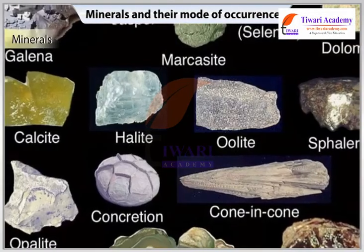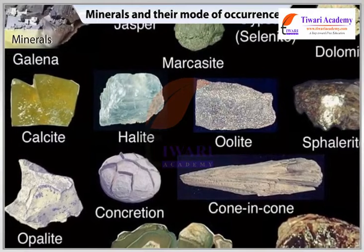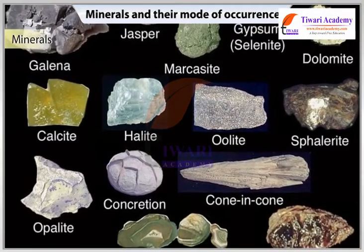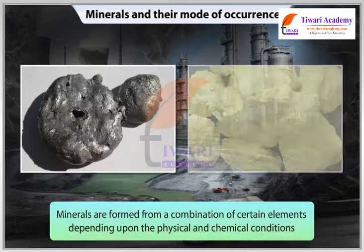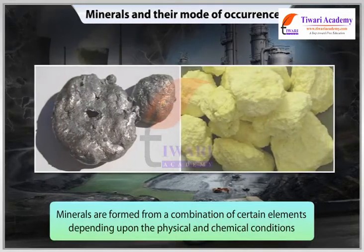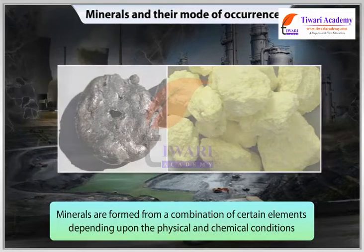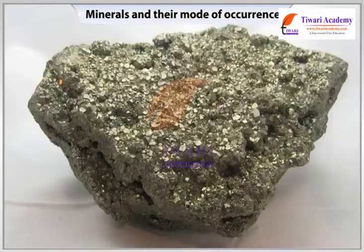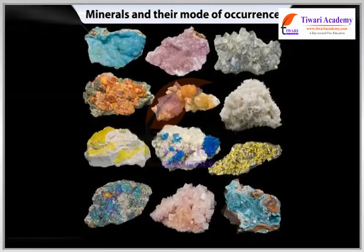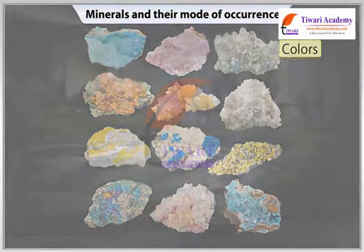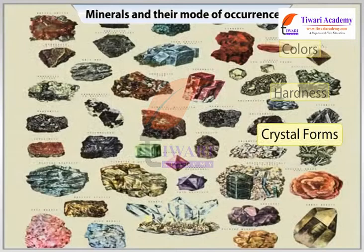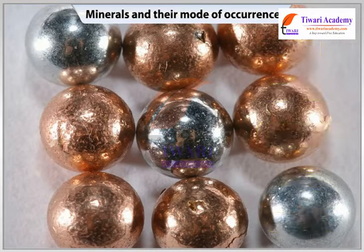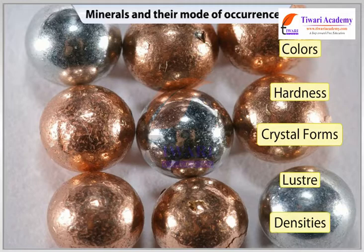Although over 2000 minerals have been identified, only a few are abundantly found in most of the rocks. Minerals are formed from a combination of certain elements depending upon the physical and chemical conditions under which they are formed. We have minerals with a wide range of colors, hardness, crystal forms, luster and densities. These properties are often used to classify the minerals.